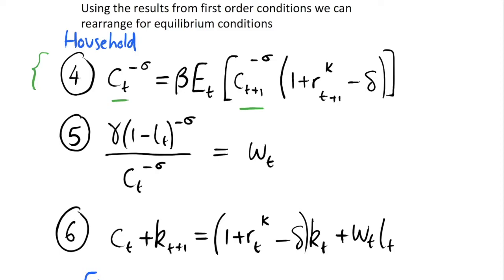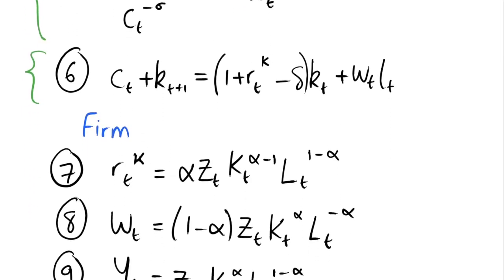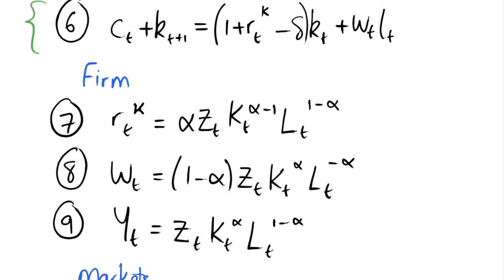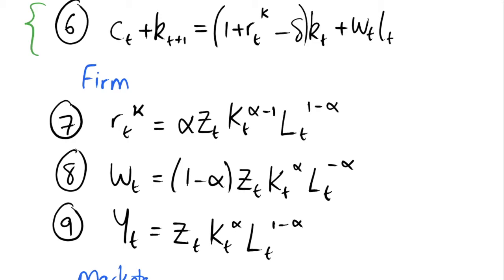We also get a condition showing the trade-off between labour and consumption equals the wage rate — which we showed in the previous video — and we still have our household budget constraint. These three equations come very simply from our Euler equation, the intratemporal condition, and the budget constraint.